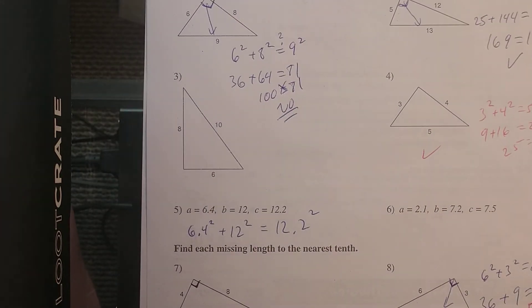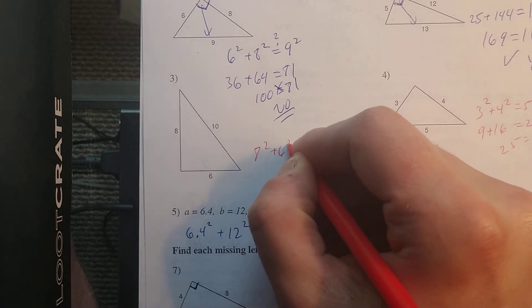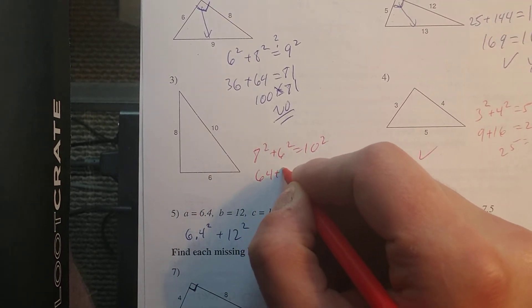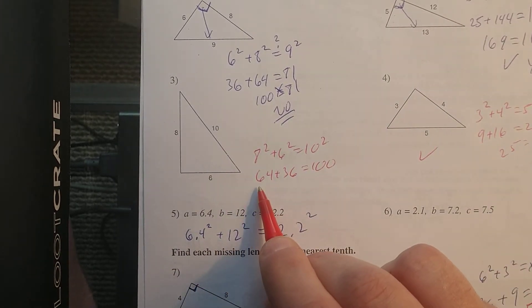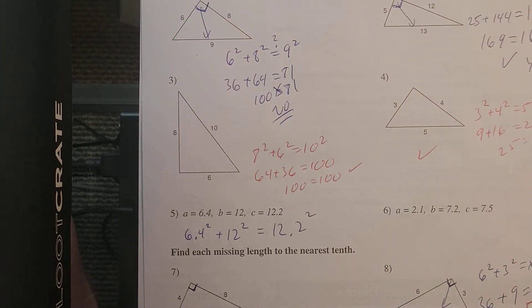Yes. For number three, this is going to be 8² + 6² = 10². So this is 64 + 36 = 100. 36 and 64 is 100 equals 100, so that one checks out as well.